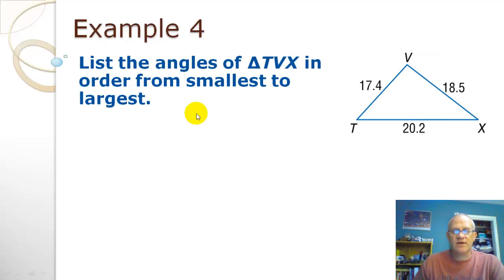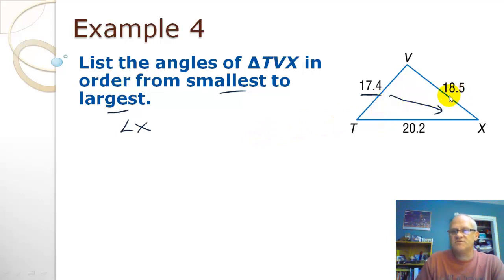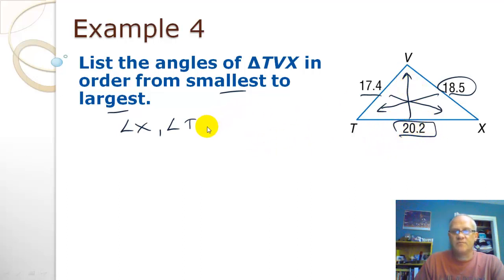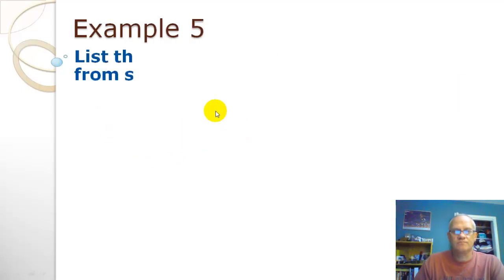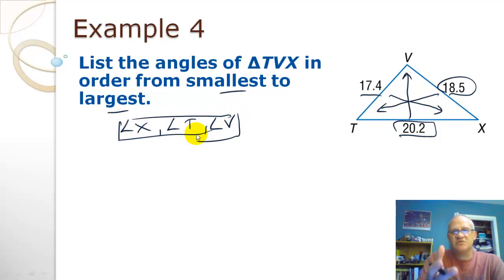Same type of problem. We want to order the angles from smallest to largest. The smallest side is 17.4, and straight across from that is angle X — the smallest angle. The next side is 18.5, and across from that is angle T. The largest side is 20.2, and straight across from that is angle V. So the order from smallest to largest is angle X, angle T, angle V.